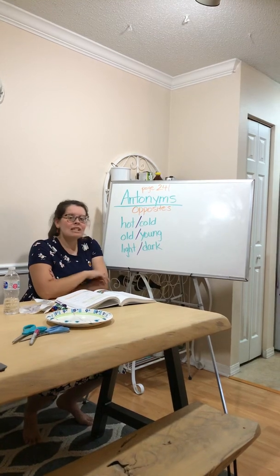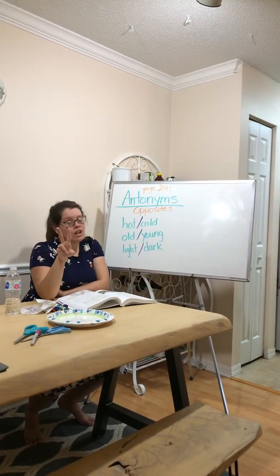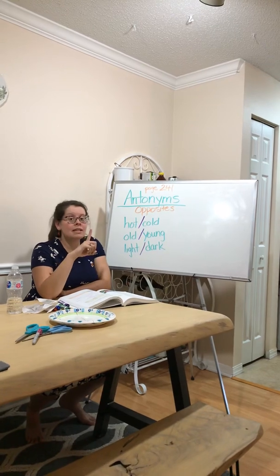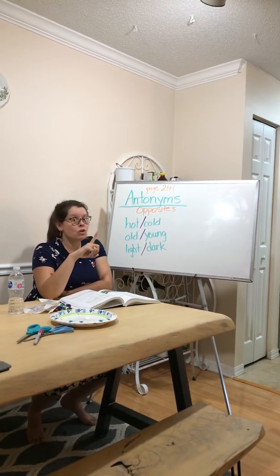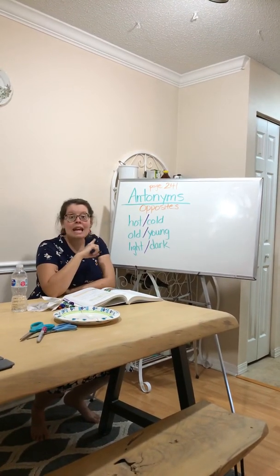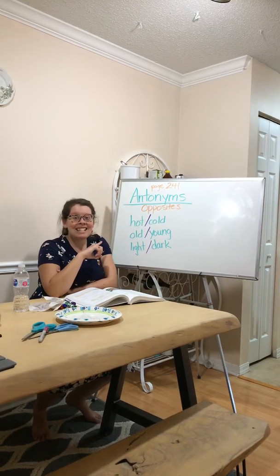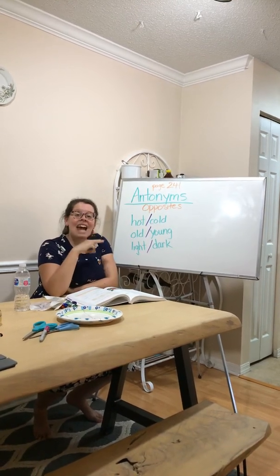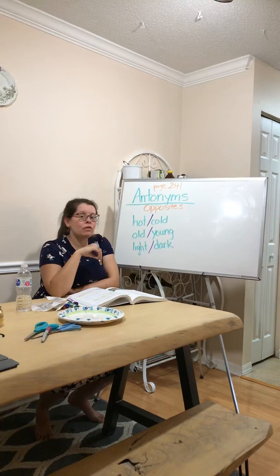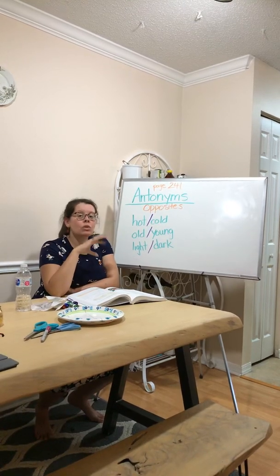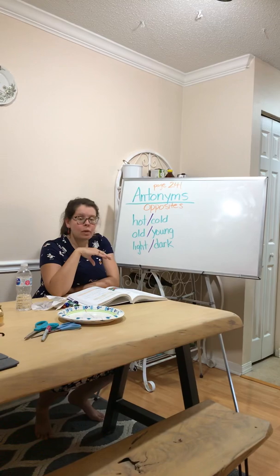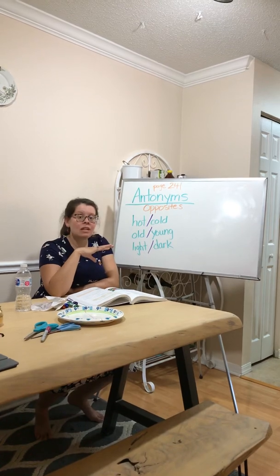We are going to be doing two things in this video — two different things. The first thing is we'll be introducing something new: the concept of antonyms. And then after we do this little mini lesson, we'll do a miniature review on commas — the rules that we use for commas and where commas go. And that'll be the end of the video.